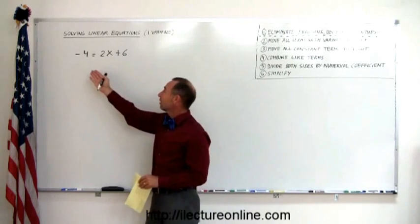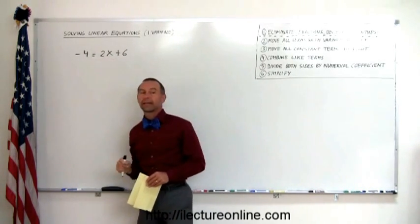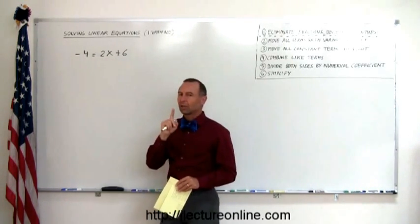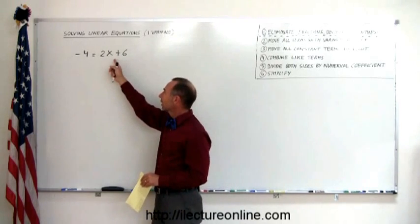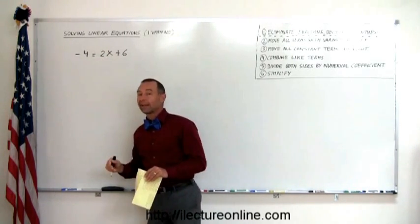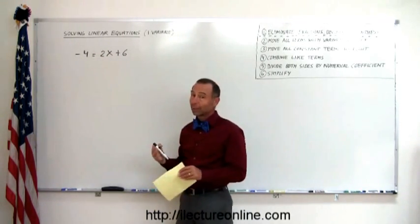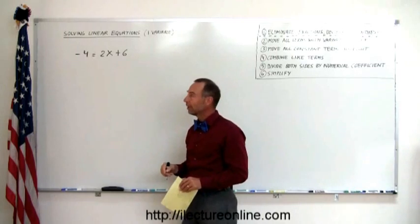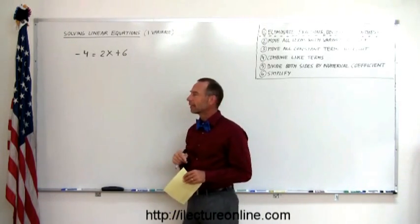It's an equation because it has a left side, an equal sign, and a right side. There's only one value for x that will make the left side equal to the right side. Just by looking at it you can't necessarily tell what that number is, so we're going to go through this very systematically.